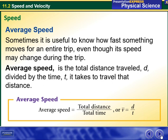Average speed is the total distance traveled (denoted as d) divided by the time (denoted as t) it takes to travel that distance. So average speed equals total distance over total time, or d over t.